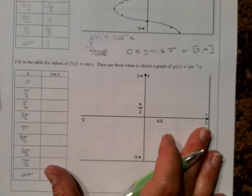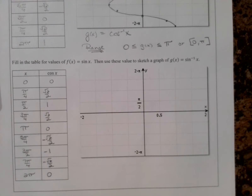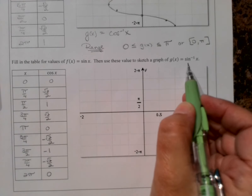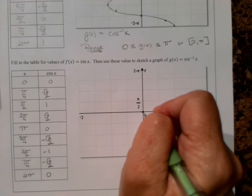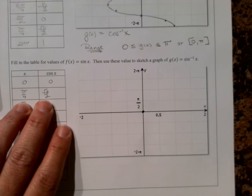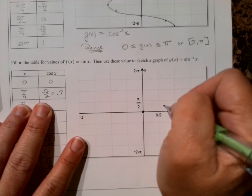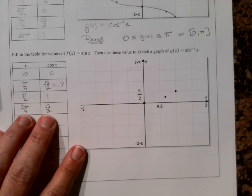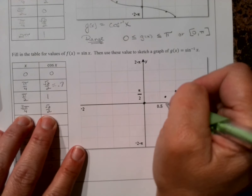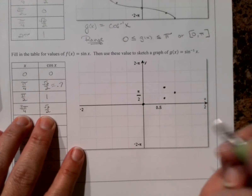We're going to do a similar exercise for inverse sine. Pause the video and fill in that table without looking at your unit circle. Now let's switch our x's and y's and plot these points to get a graph for inverse sine x. Starting with 0, 0 — switch x and y, still 0, 0. Pi over 4, square root of 2 over 2, again 0.7 — go to 0.7, pi over 4. Pi over 2, 1 becomes 1, pi over 2. 3 pi over 4, 0.7 becomes 0.7, 3 pi over 4 — and there's our first repeated output value, so we're not going to end up with a function.